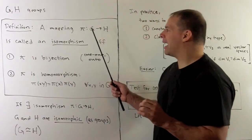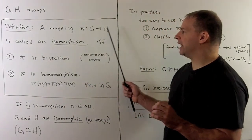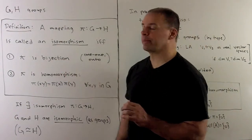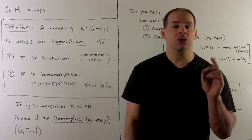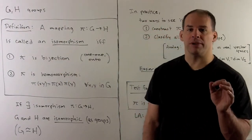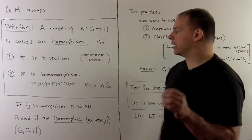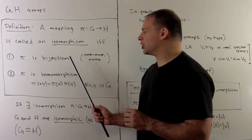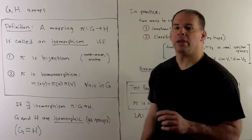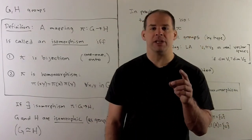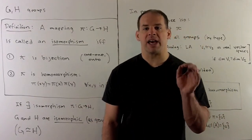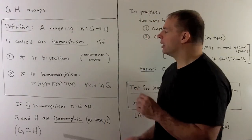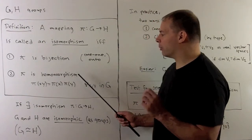We say a mapping pi from G to H, where G and H are groups, is called an isomorphism if and only if pi is a bijection — one-to-one and onto — which just means equal sets, and pi is a homomorphism.